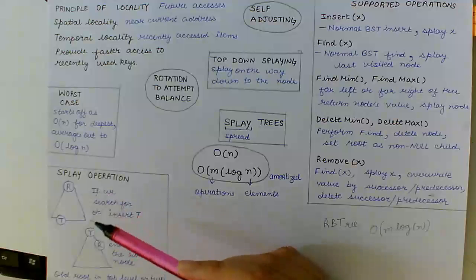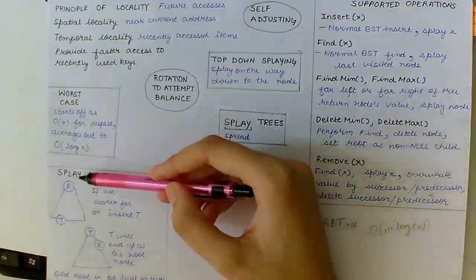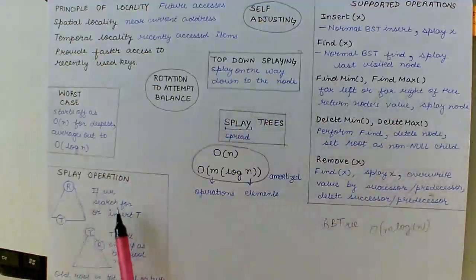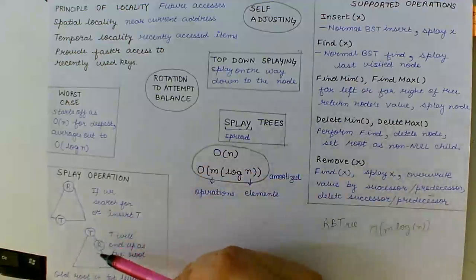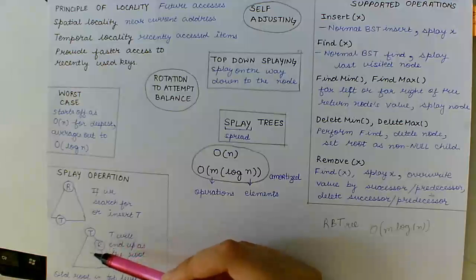So, the root is currently at the top and if we search for or insert T, then T becomes the new root and the old root ends in level 1 or level 2 of the tree. So, the root was also recently accessed and as we can see it is quite near the root as well.